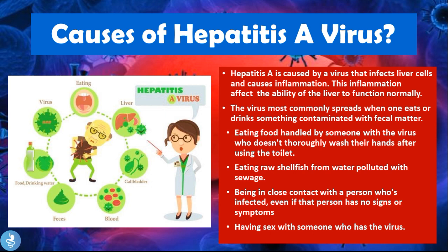Hepatitis A is caused by a virus that infects liver cells and causes inflammation, which affects the liver's ability to function normally. The virus most commonly spreads when a person eats or drinks something contaminated with fecal matter. This can occur by eating food handled by someone with the virus who doesn't thoroughly wash their hands after using the toilet, eating raw shellfish from water polluted with sewage, being in close contact with an infected person even if they show no symptoms, or having sex with someone who has the virus.